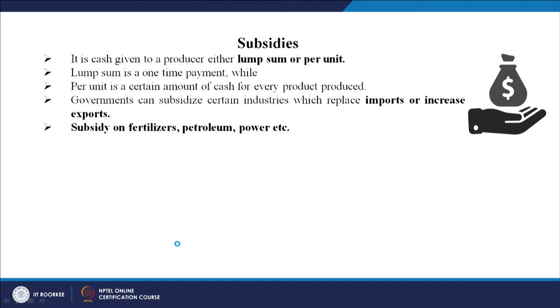The next instrument is subsidies. A subsidy is cash given to the producer either as a lump sum or per unit. A lump sum is a one-time payment while per unit is a certain amount for every product produced. Governments can subsidize certain industries to replace imports or increase exports — for example, subsidizing agriculture so the country avoids importing agricultural items and dependency is reduced.